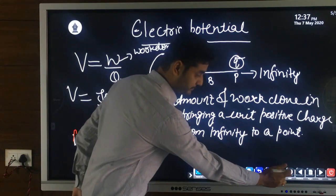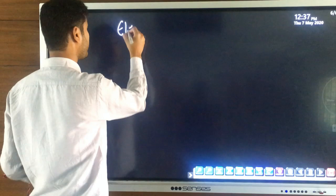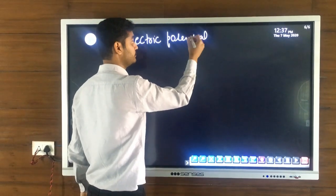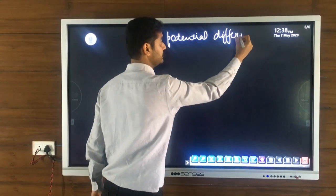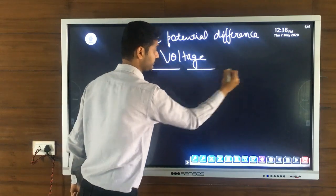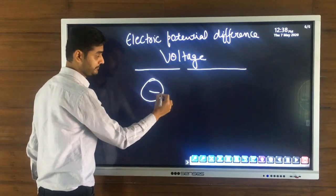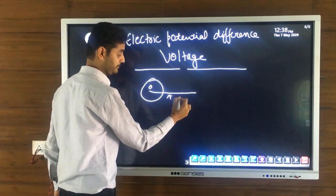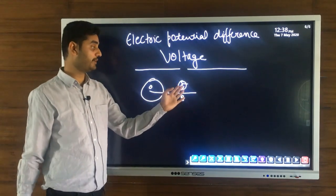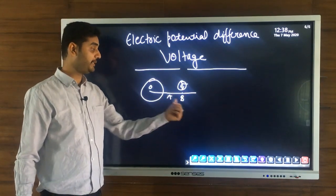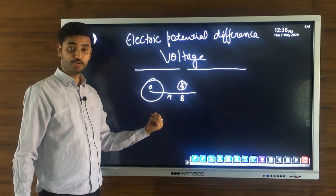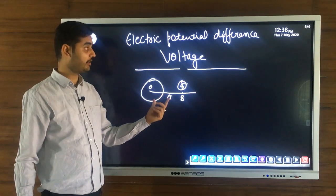Next we discuss electric potential difference, which is usually called voltage. Consider a conductor with a charge at point Q. If we bring this charge from point B to point A, the amount of work done in bringing this unit positive charge from B to A is called electric potential difference or voltage.